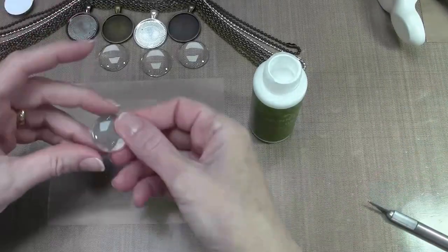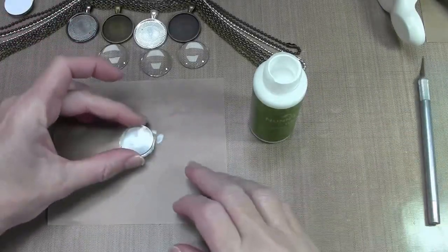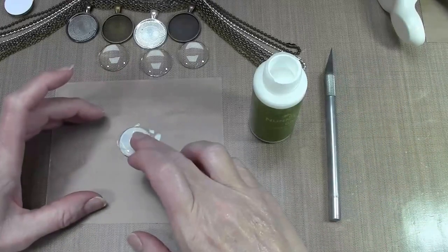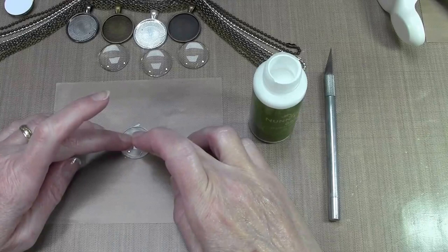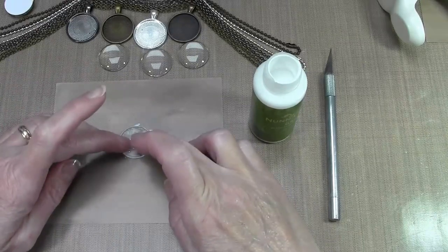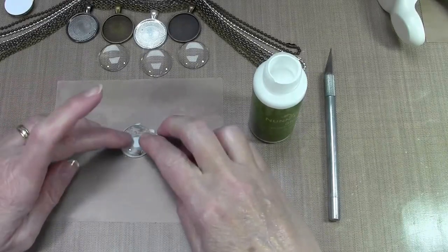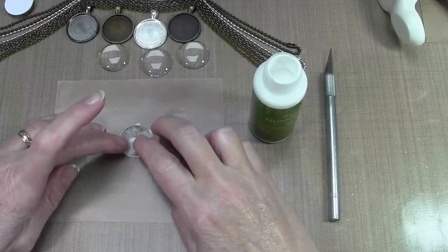You're going to take one of the glass domes and you're going to center it on the image and you're going to press really hard because you want to get all the bubbles out the edges. And once you have all the bubbles out...